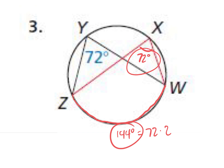Cody's question: if you extend both angles, angles XZ and XW form the same arc ZW — so those two angles have to be congruent.